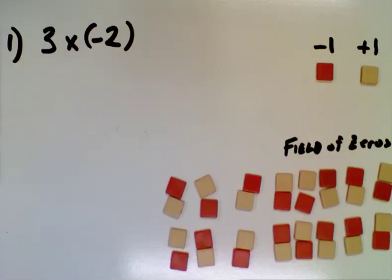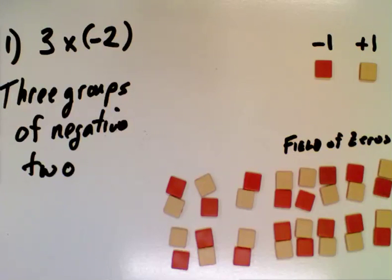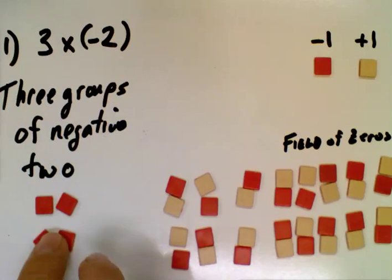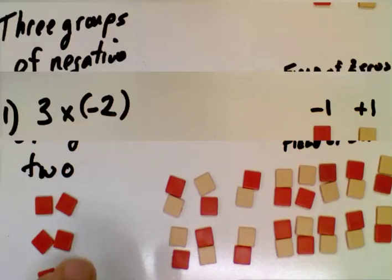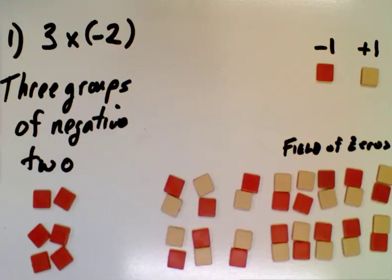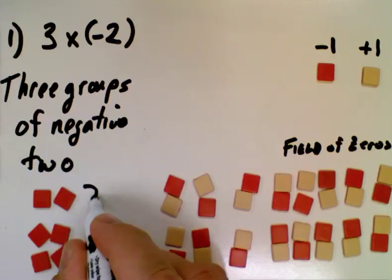So when you do a positive times a negative, it's fairly straightforward. We just literally interpret what is in the question. So we have three groups of negative 2, and so you can just bring those in. There's one group of negative 2, two groups of negative 2, and three groups of negative 2. So all together, we end up with negative 6.